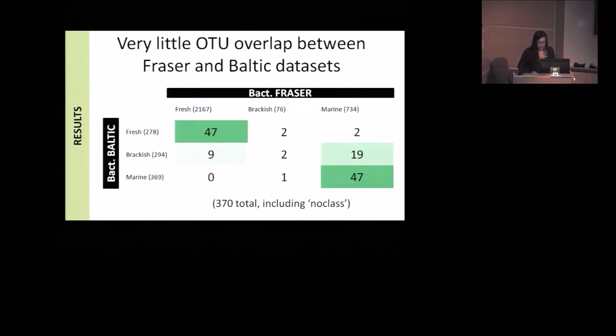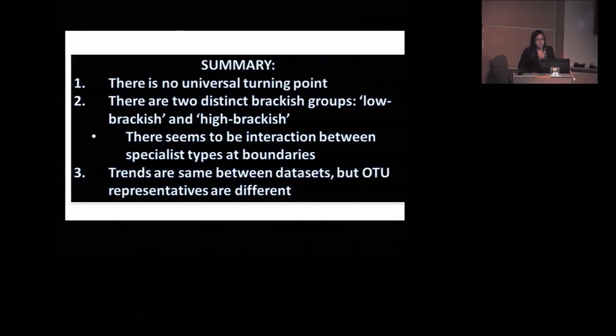So in summary, we found no universal turning point in our data, but we did find two distinct brackish groups of OTUs, a low brackish specialist and a high brackish specialist. And there seems to be some kind of interaction between where these specialist ranges are in relation to freshwater and marine water specialists. And lastly, although the trends are the same between the data sets, the OTU representatives are different. So there are different things living in the Fraser River and the Baltic Sea. And with that, I just want to thank my lab, the Hallam lab, my supervisor, Stylian, and a plethora of techs and helpers that have helped me do this work. Thanks.